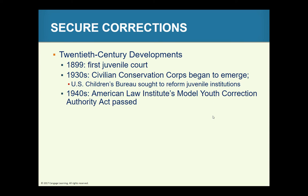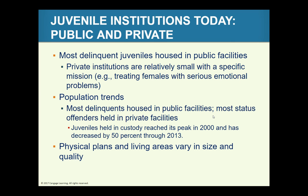Regarding trends in juvenile institutions today, most status offenders are held in private facilities. In 2013, fewer than 53,000 juvenile offenders were in public and private facilities in the U.S. Juveniles in custody reached their peak in 2000 and decreased by 50% through 2013.